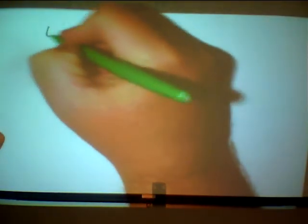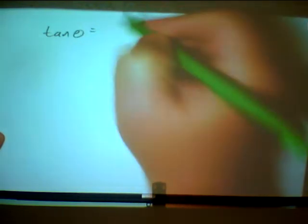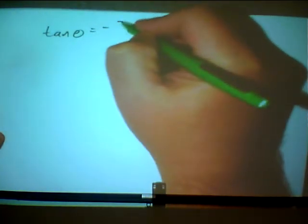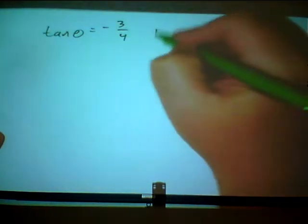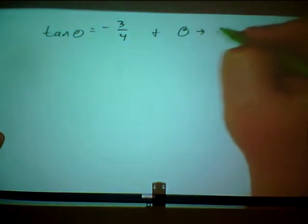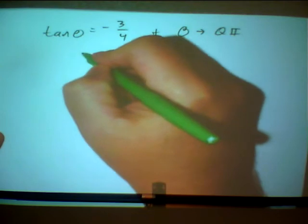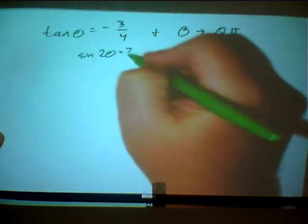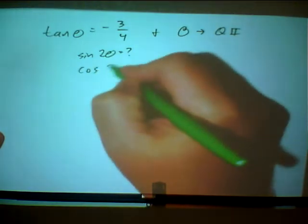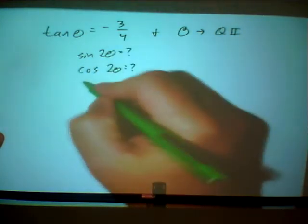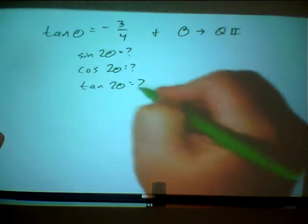Okay, I'm going to do two more problems to finish out this test number two review. The first one is problem 47, and it says we're given an angle such that the tangent of theta is minus three-fourths, and theta is in the second quadrant. Then they ask us for three things: what would the sine of two theta be, what would the cosine of two theta be, and what would the tangent of two theta be.